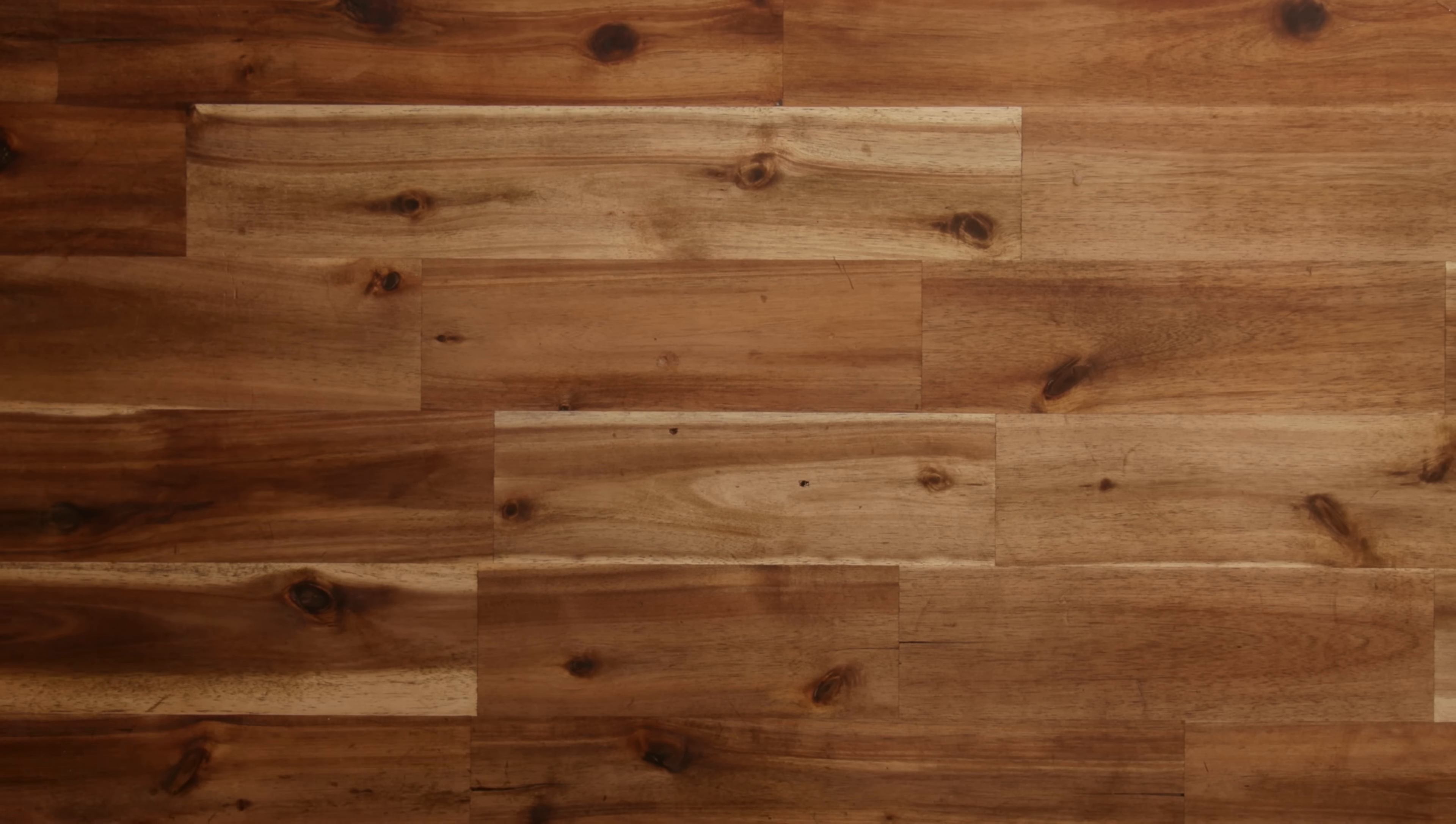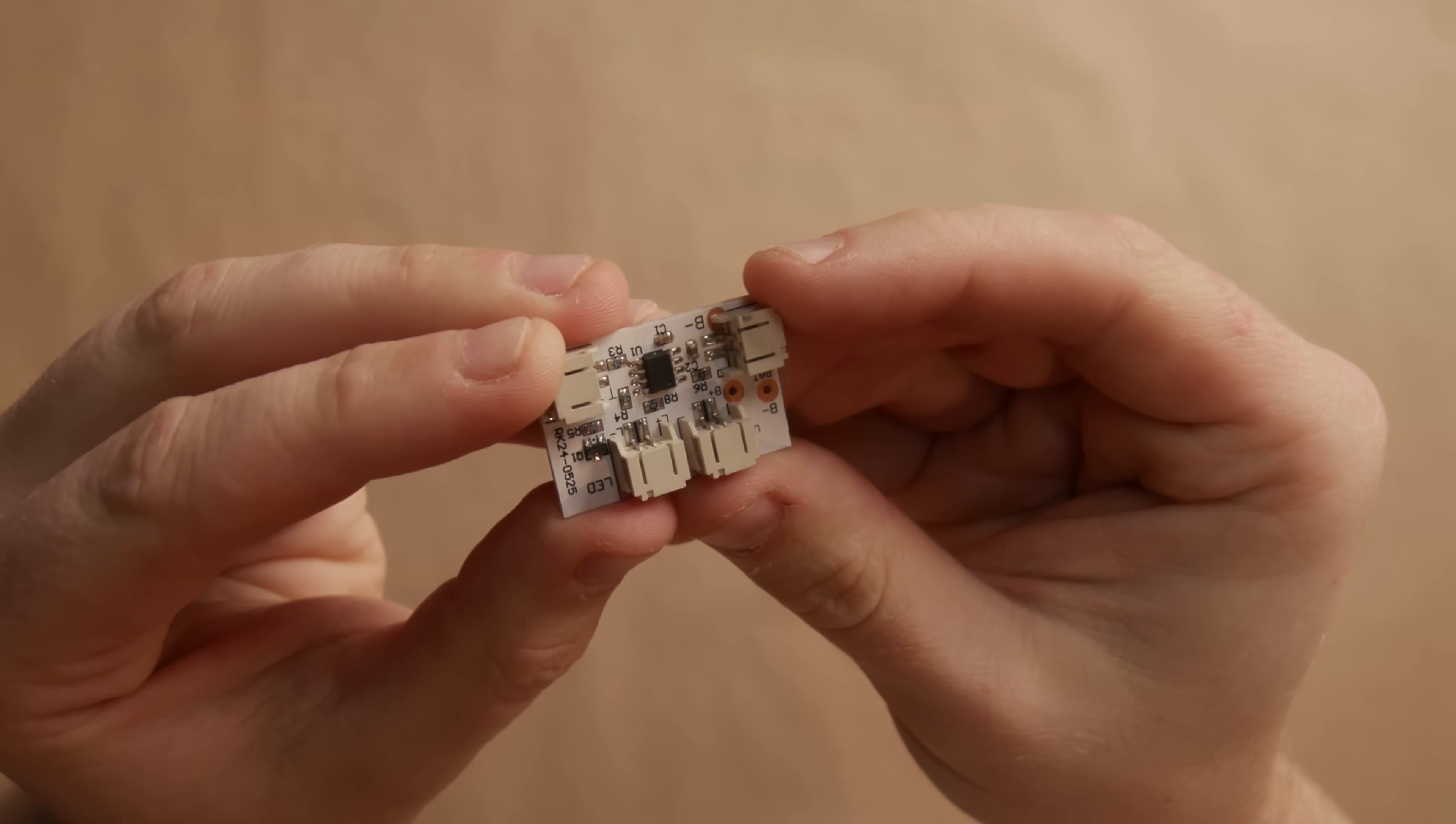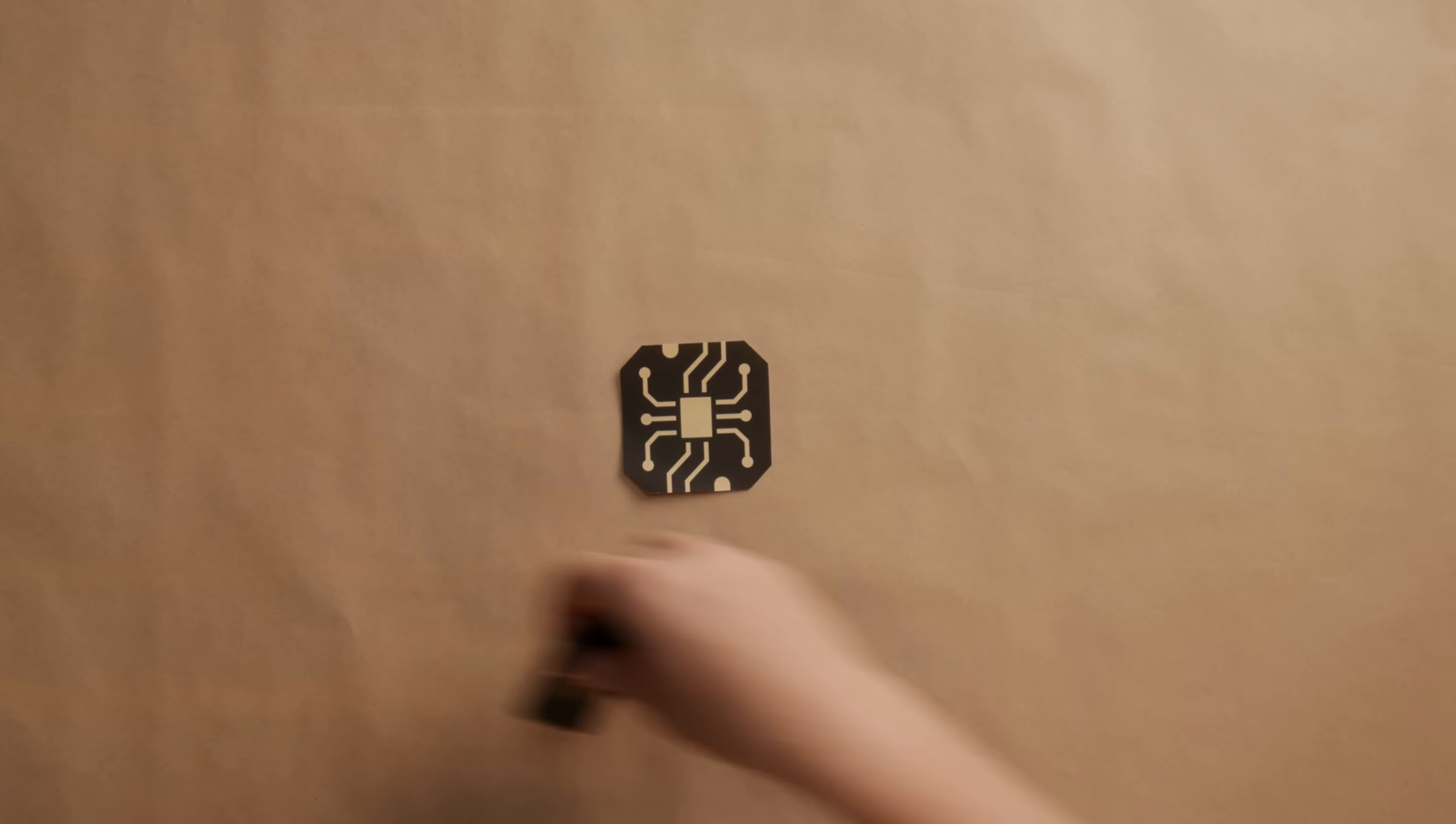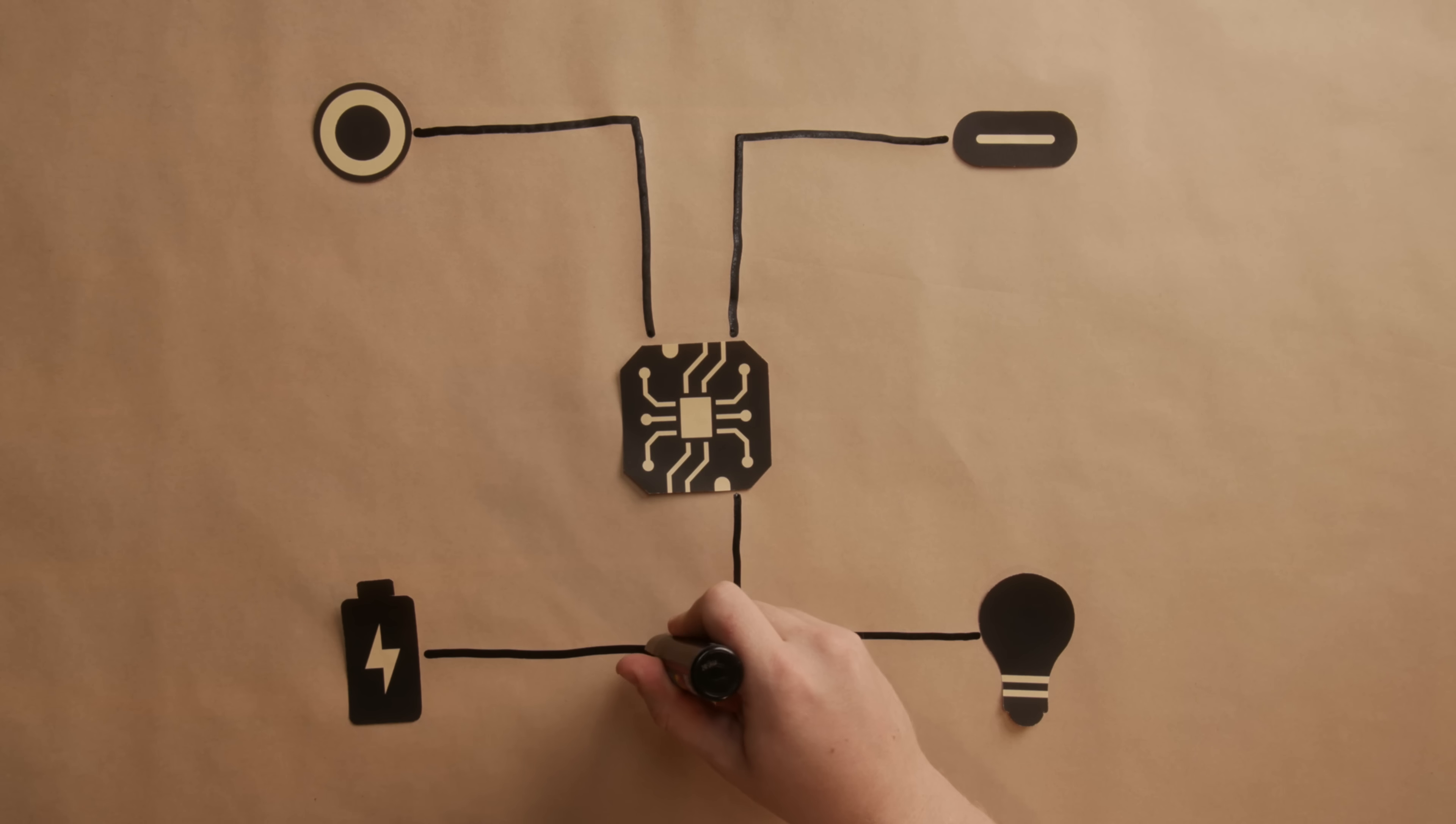After a bit of investigation, this is how the lamp works. This small PCB is the brain of the whole operation. The battery, touch sensor, LEDs, and USB-C port all connect to it. When someone touches the button, the PCB detects this and turns on the LED light.